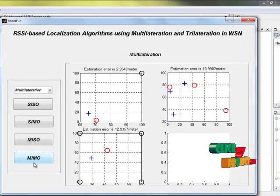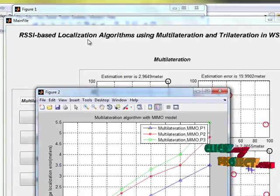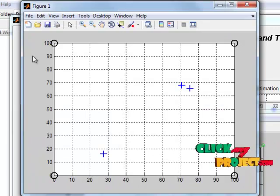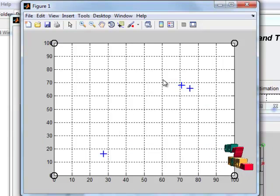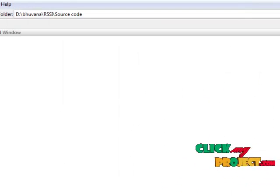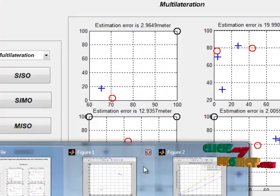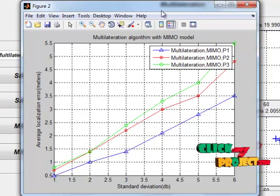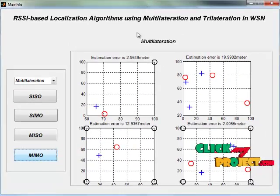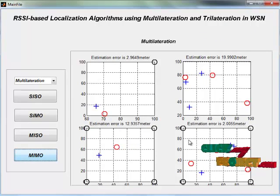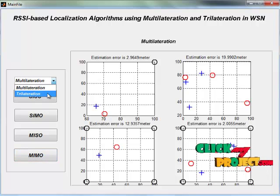Then multi input with multi output. Here is the error estimator where MIMO is the best because the estimated error is very low. Then we are going to see for trilateration.